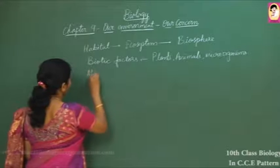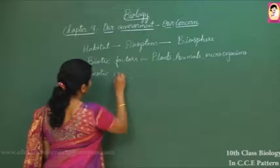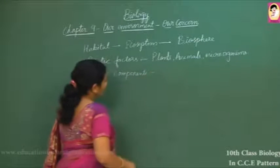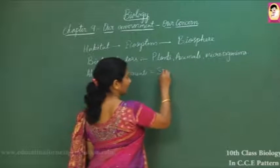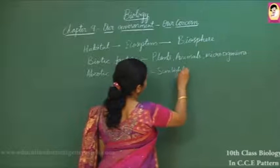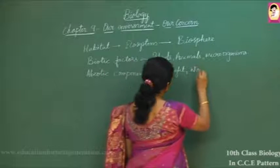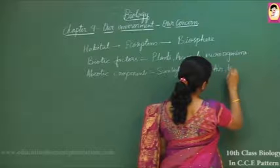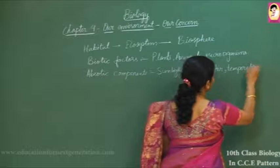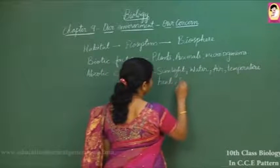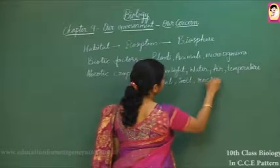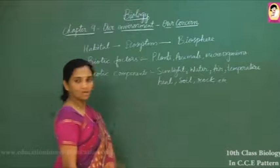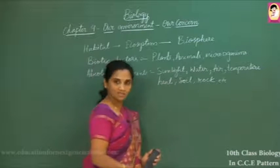Abiotic components are the non-living factors. Examples include sunlight or light, which is essential for living organisms to survive; water, without which no living organism can survive; air, temperature, heat, soil, and rocks surrounding us. All these make up our abiotic components, and both biotic and abiotic components are required for all living organisms to survive.